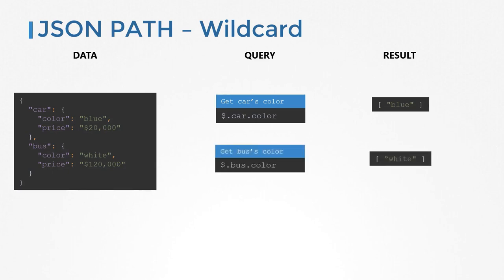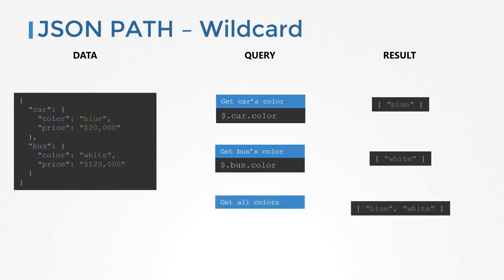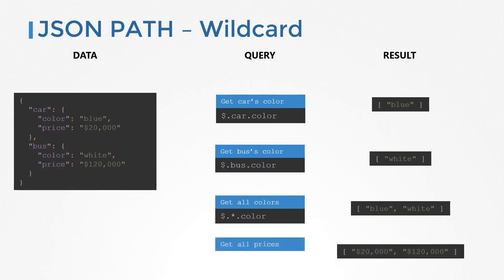What if we want to get all different colors? For example, retrieve all the different colors of all the different vehicles available in your store. Instead of saying car or bus, you could replace it with a star or wildcard meaning 'any'. So your query would be $.*.color. Similarly, to get all prices, you would say $.*.price. A star wildcard within a dictionary means all or any property of a dictionary.